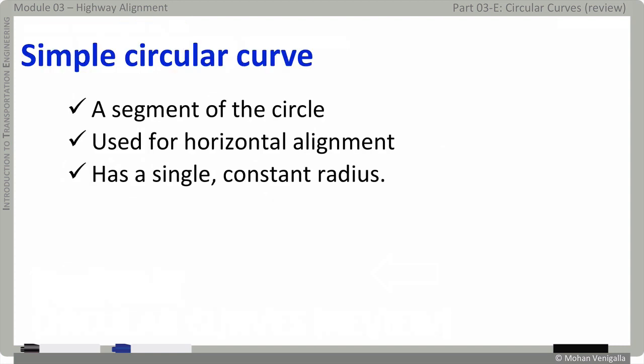A simple circular curve is nothing but a segment of a circle and it's used for horizontal alignment and it has a single constant radius.